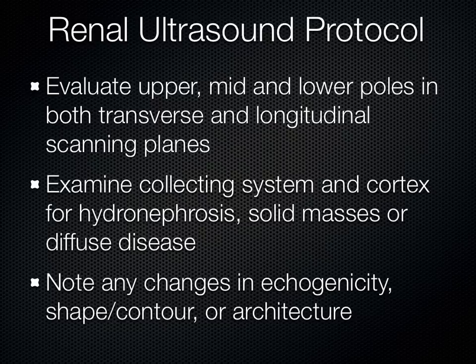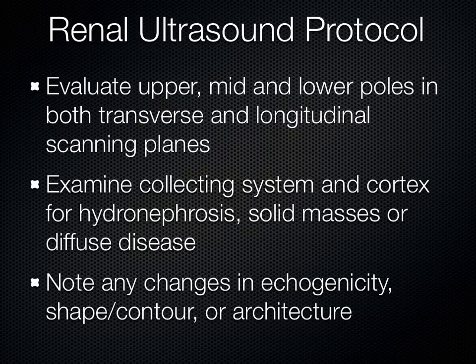When looking at the kidneys, think about the upper pole — toward the head — the lower pole toward the feet, and the mid pole in between. Look at them in their long axis, then flip the probe 90 degrees and assess them in short axis, evaluating architecture, echogenicity, shape, and contour. Eventually you'll be looking for problems in the collecting system, cortex, cystic structures, solid masses, and diffuse disruptions in the kidney.